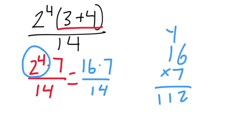16 times 7 is 112. So we end up with the improper fraction 112 over 14 which when I simplify that and divide is 8 whole.